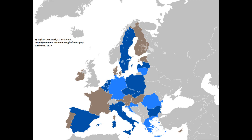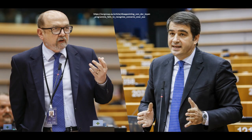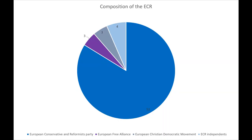The largest national parties are the New Flemish Alliance of Belgium, the Civic Democratic Party of the Czech Republic, Brothers of Italy, Law and Justice of Poland, Vox of Spain, and the Swedish Democrats. It is headed by Raffaele Fitto of Italy and Ryszard Legutko of Poland. The composition has the European Conservatives and Reformists Party holding 52 MEPs, four are independent, three are members of the European Christian Political Movement, and the remaining three are European Free Alliance members.